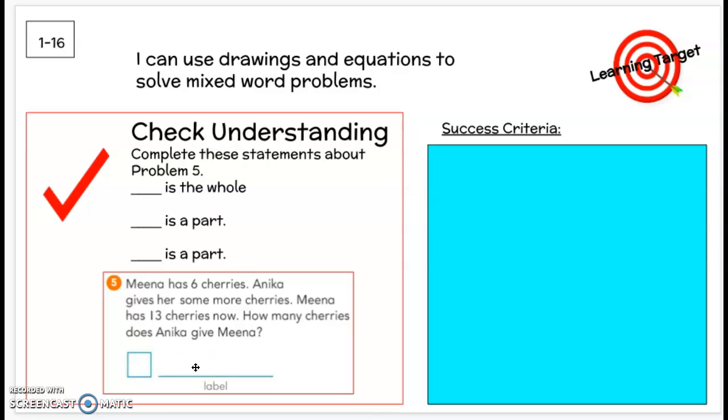The check understanding is the last thing on your page. So now you should be able to understand which parts are the whole and which are the parts. So it says to complete that about problem five. So that's the one that we read with Mina has six cherries. Annika gives her some more cherries. Mina has 13 cherries now. How many cherries does Annika give Mina?